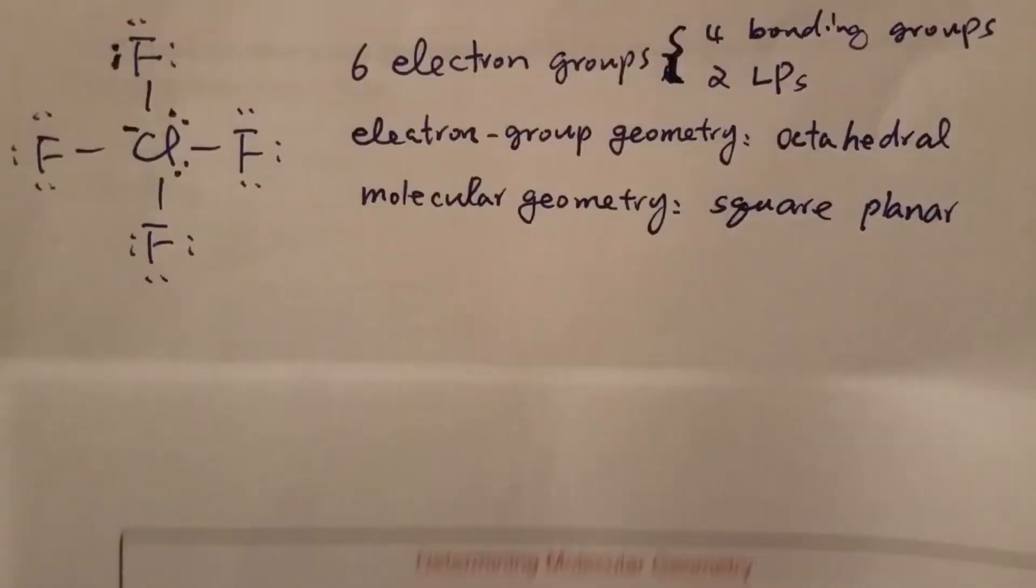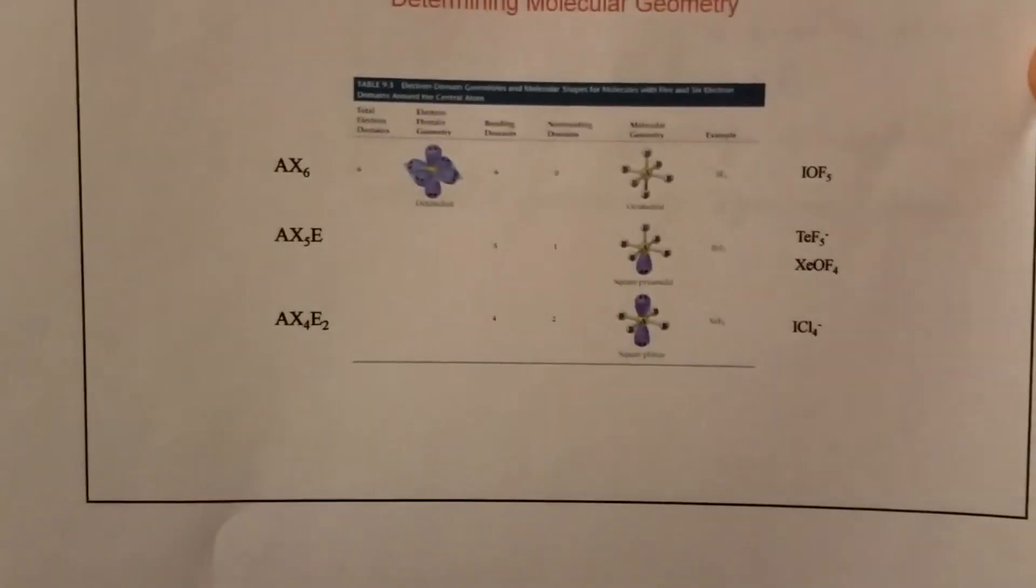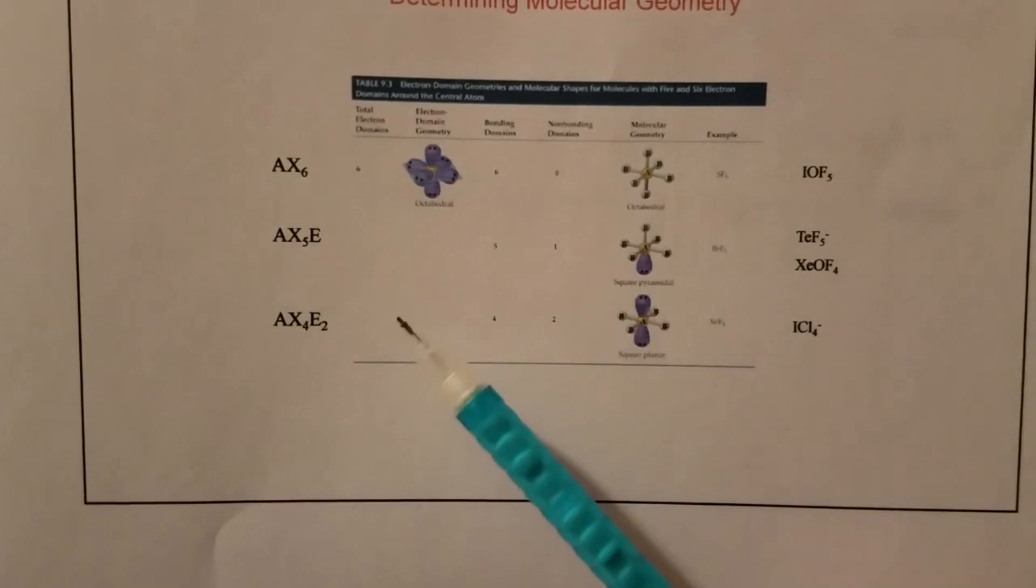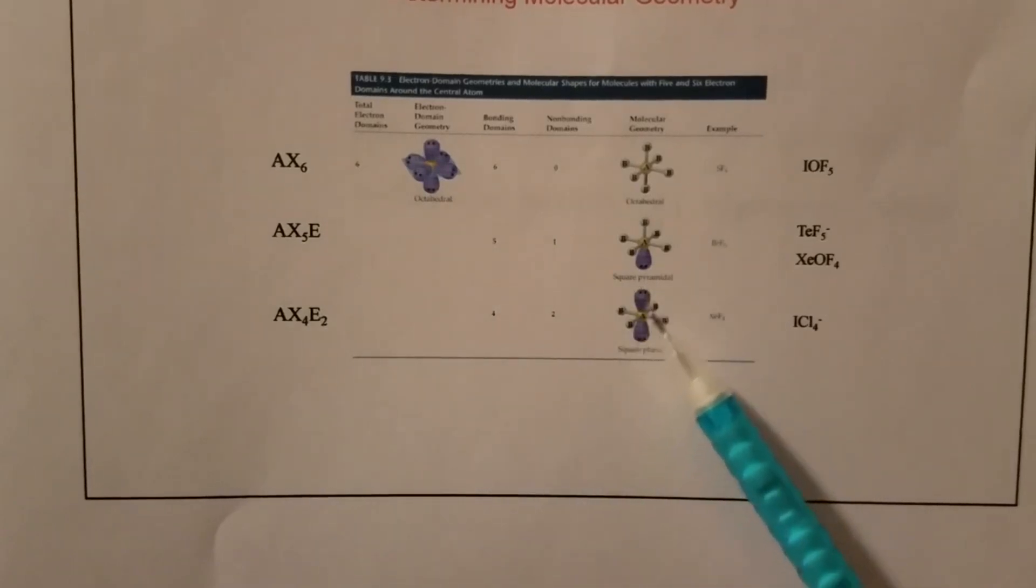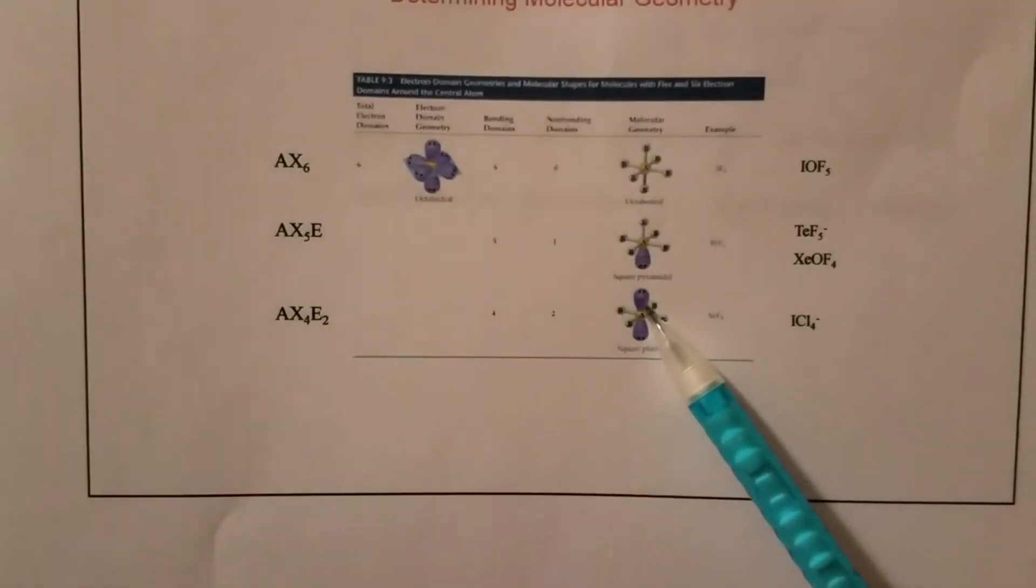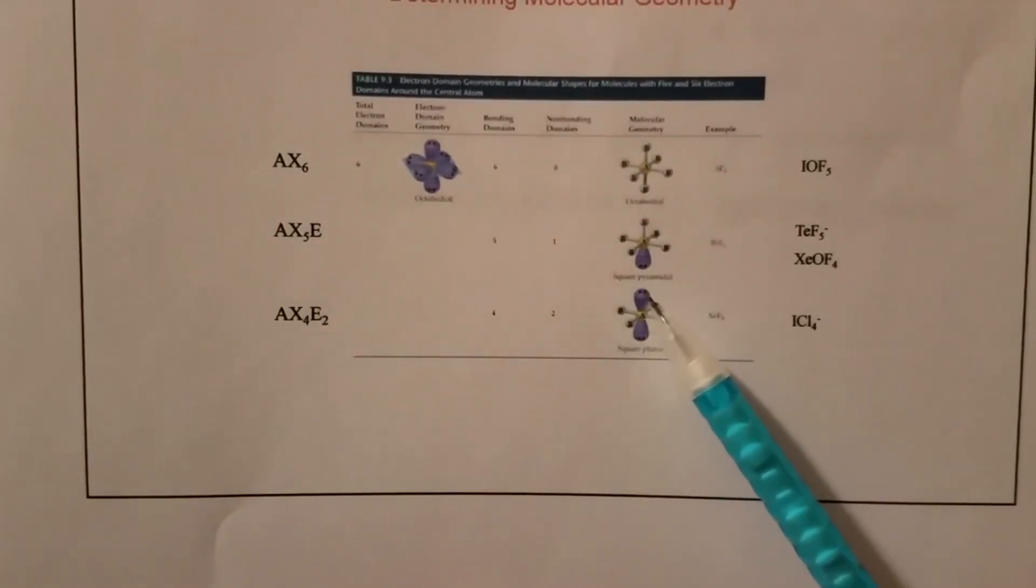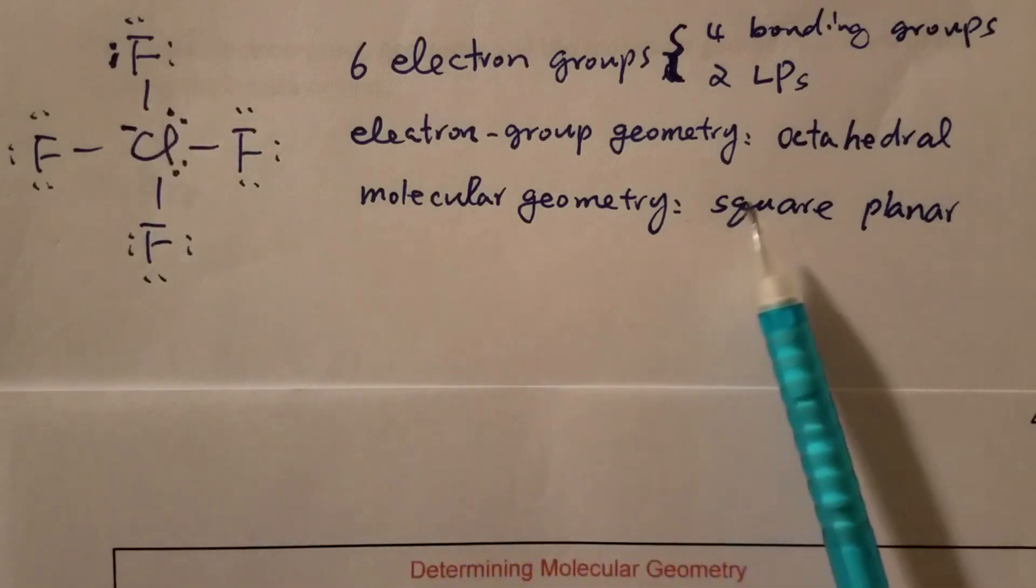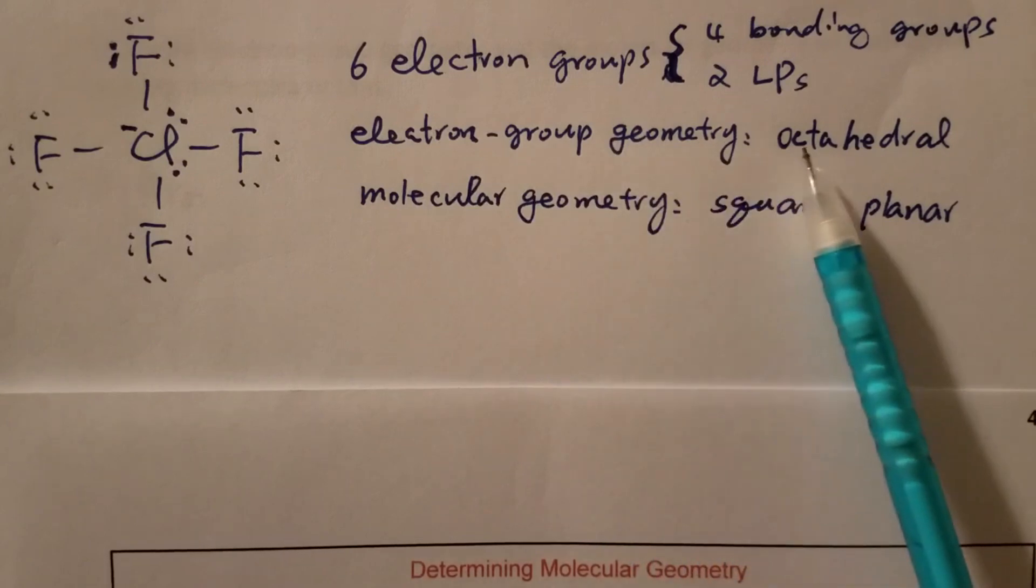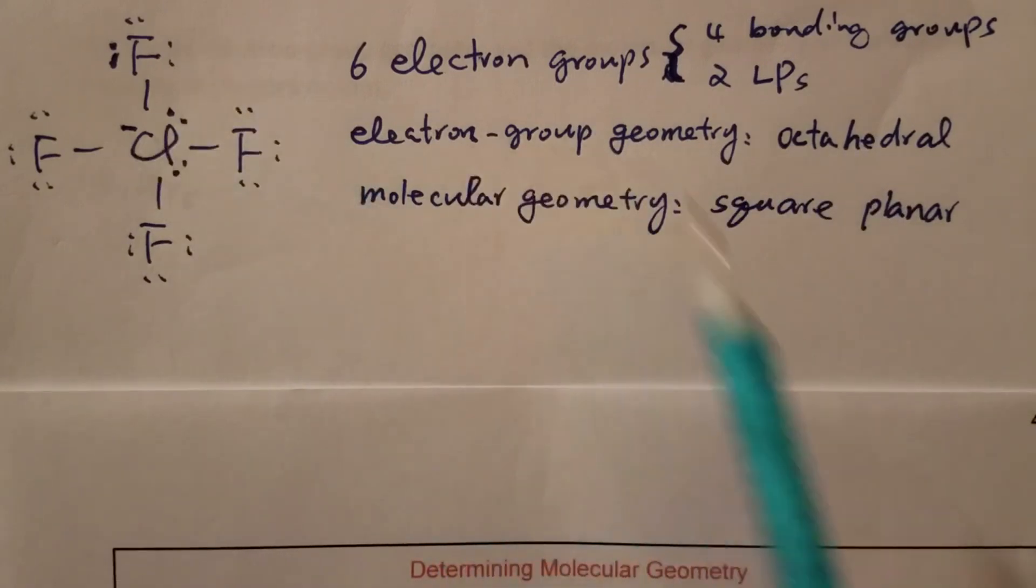The reason the molecular geometry is square planar is because if we concentrate on the molecule, there is only one chlorine and four fluorines. That's an AX4 model, then E2 means two lone pairs. When we determine the molecular geometry, we can ignore those two lone pairs, and it just leaves this planar square. That's why the molecular geometry for this polyatomic ion is square planar, while its electron group geometry is octahedral, based on six groups of electrons.